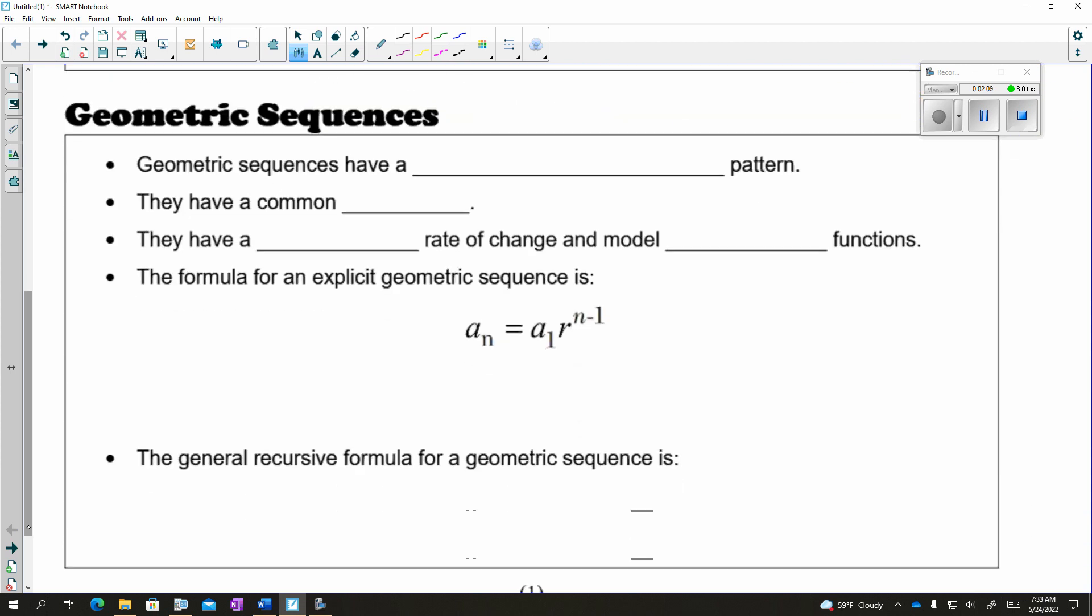So for geometric sequences, geometric sequences have a multiplying or dividing pattern. They have a common ratio. They have a percent rate of change and they model exponential functions.